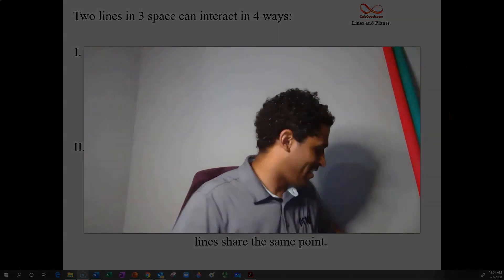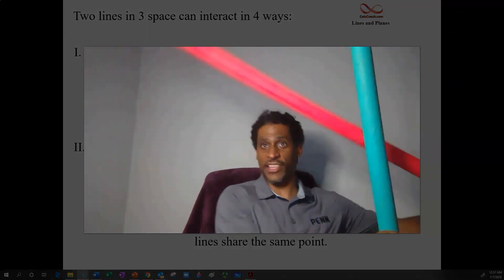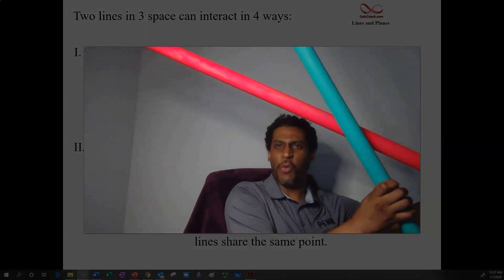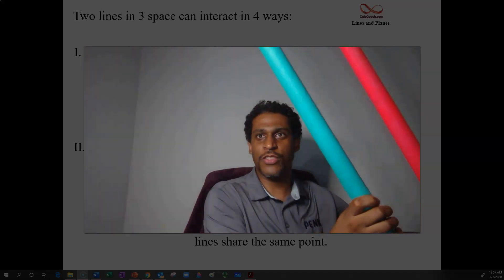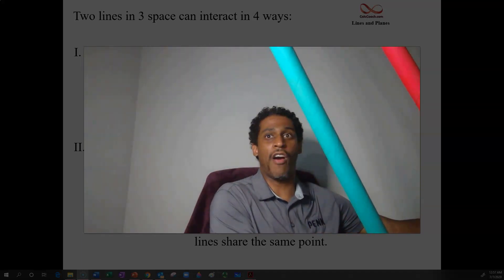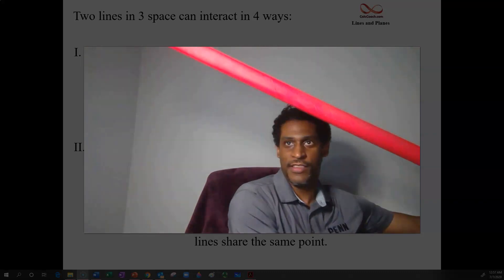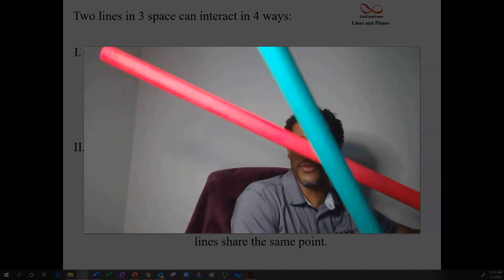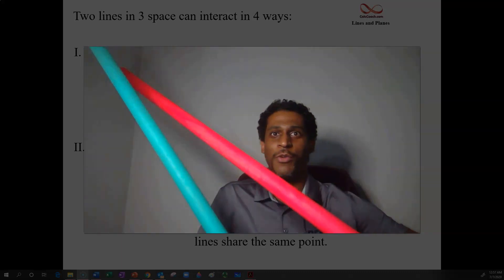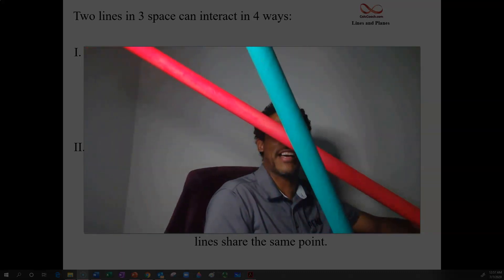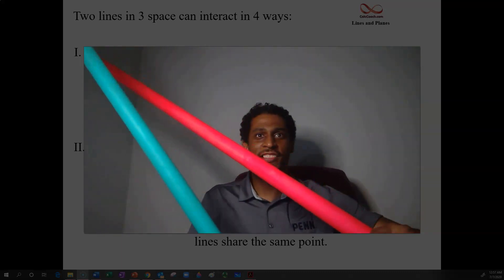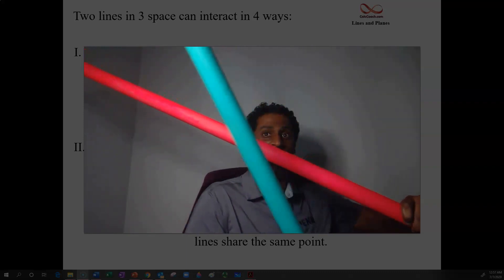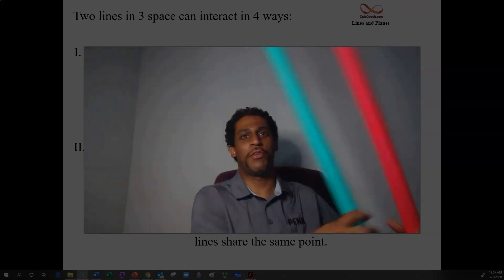Intersecting lines share the same point. Skew lines are where they aren't parallel and they aren't intersecting. There are no values of T and W that make the lines share the same point. These lines are not going to intersect, and they're not parallel. That's pretty fun.